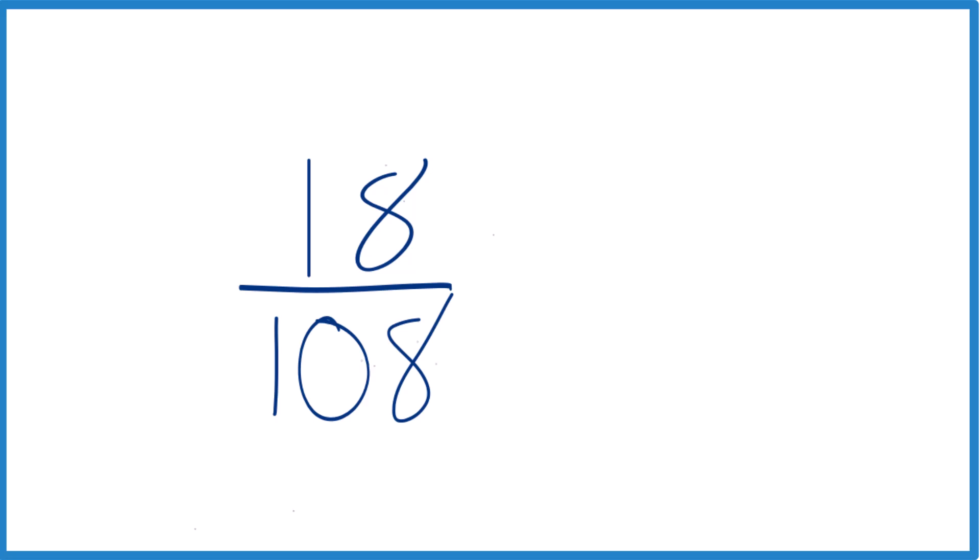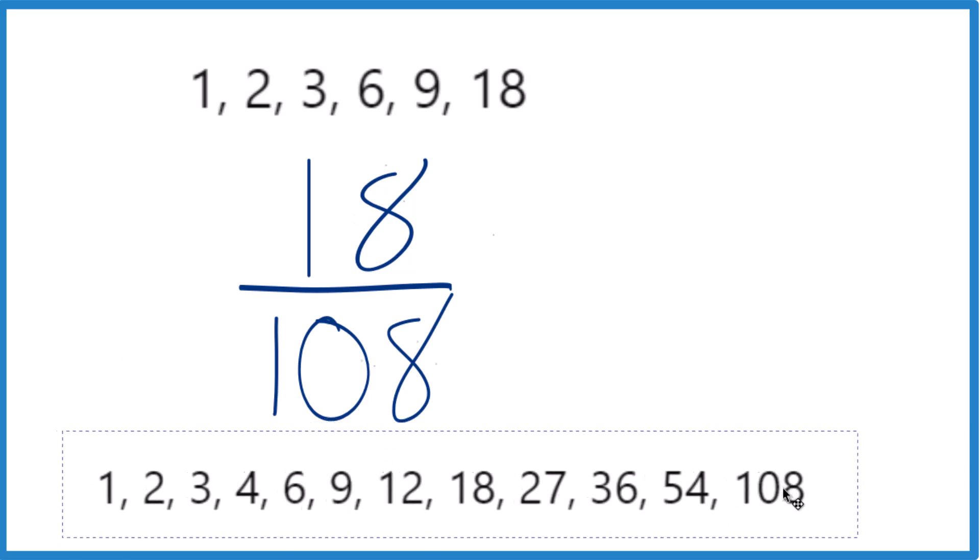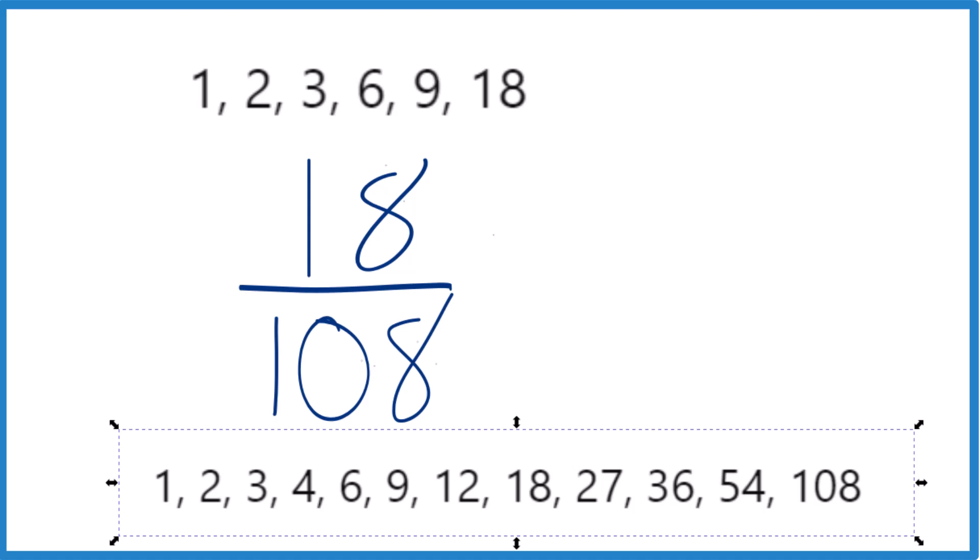So the factors for 18, we have 1 times 18, 2 times 9, and 3 times 6. For 108, there are a bunch of them. So these are the factors for 108.